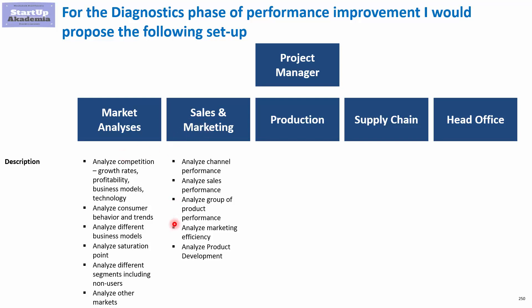In sales and marketing, your aim is to analyze efficiency in different dimensions: channel, sales force performance, group of products, marketing efficiency, and campaigns. Finally, it's worth looking at product development — how it is organized, how it fits in with the trends, and whether it's somehow linked to them or totally independent.